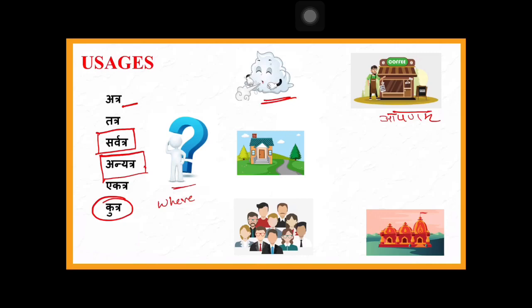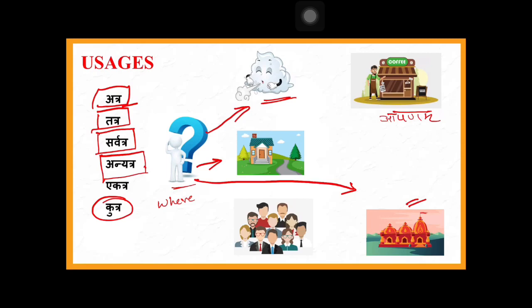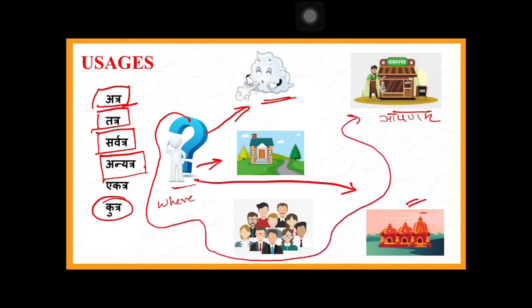Tatra means 'there' — not here but over there. Devalayah tatra asti — the temple is there. Atra means 'here' — graham atra asti, the house is here. Anyatra means somewhere else. Ekatra means all together — it has a plural sense. For example: janaha ekatra — people are all together, perhaps for a program.